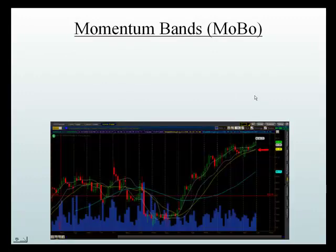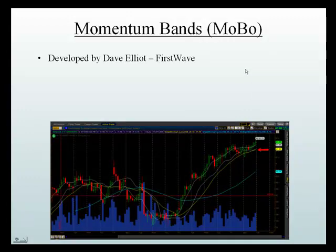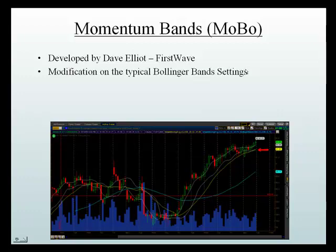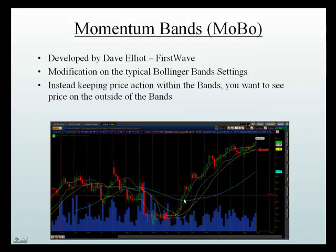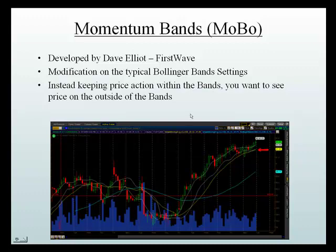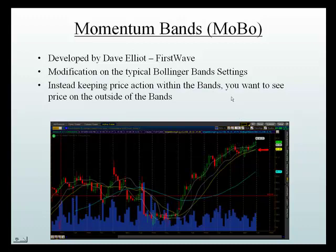Our last standard deviation channel is Momentum Bands, developed by Dave Elliott — known as First Wave — from wallstreetteacher.com. It's basically a modification of the Bollinger Band settings. The key difference is that with Momentum Bands, the price action is on the outside of the bands, whereas with Bollinger Bands and Keltner Bands all the price action was inside those bands. You can see these two white lines where the action is on the outside — that's great for identifying how long to stay in the trade, identifying trends, and using as a trailing stop to keep you inside a trade.